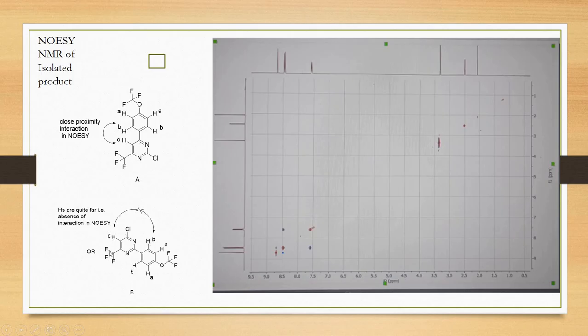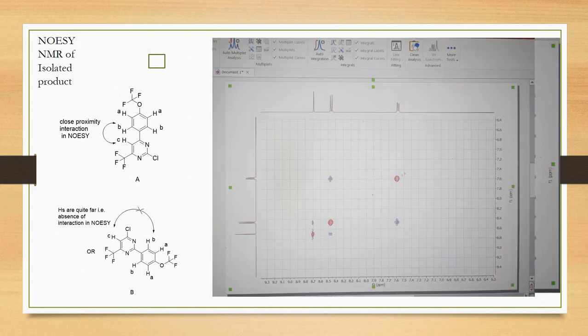Now let's see. This is the NOESY NMR, and you can see that this singlet proton is interacting with this multiplet. I will show you the zoom part of this. Now you can see very easily this proton is interacting with this singlet.